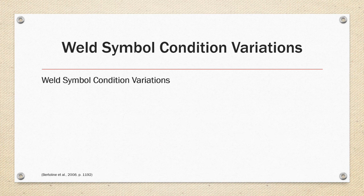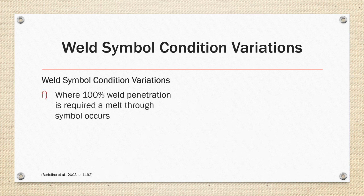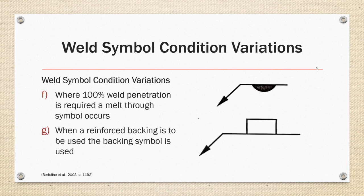Weld symbol condition variations: where 100% weld penetration is required, a melt-through symbol occurs. When reinforced backing is to be used, another symbol is applied. The full penetration symbol is a filled half-moon shape, and the reinforcing backing symbol is a rectangle.